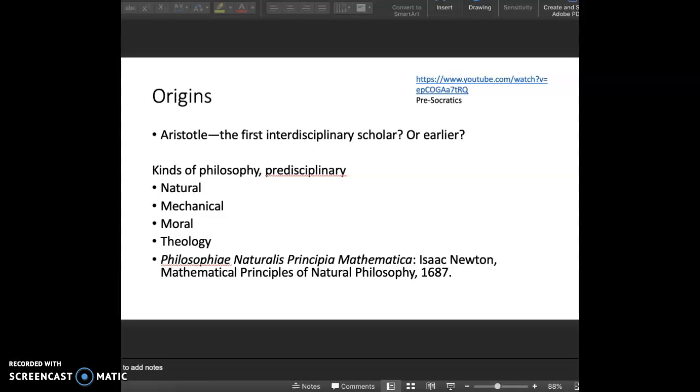So trying to figure out where interdisciplinarity comes from is a little bit tricky because before we had academic disciplines, which was in the 19th century, so the 1800s, people had categories of knowledge and wanted to categorize the world around them. But the way that knowledge work happened wasn't really the same then as it is now.